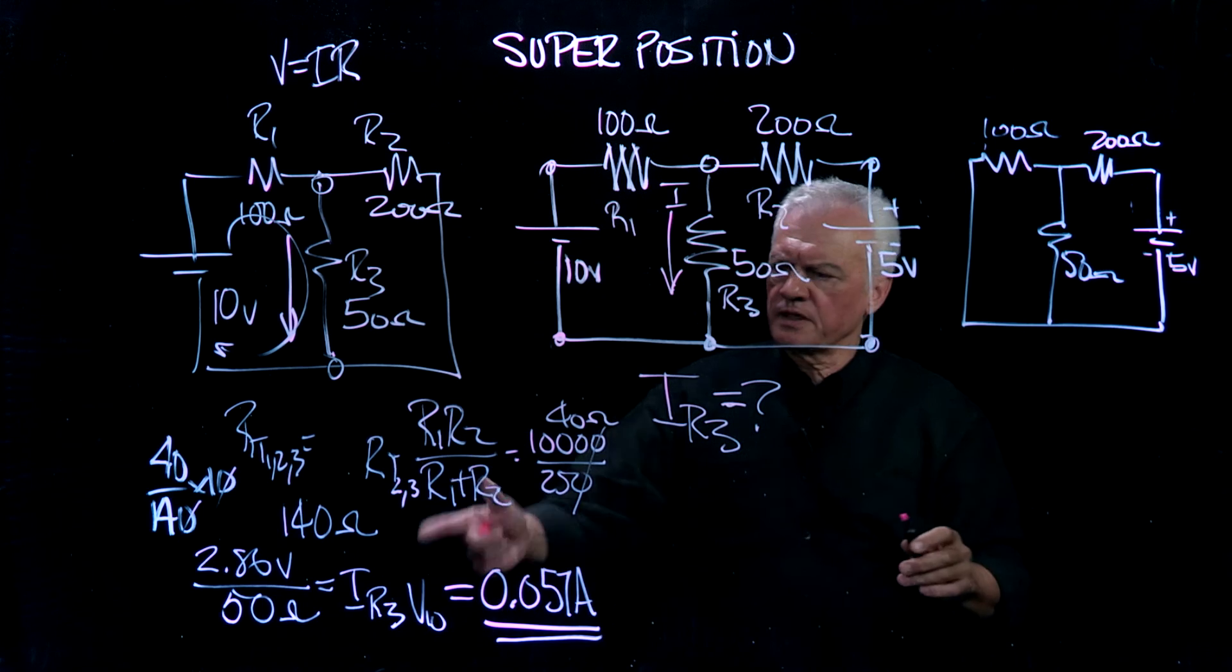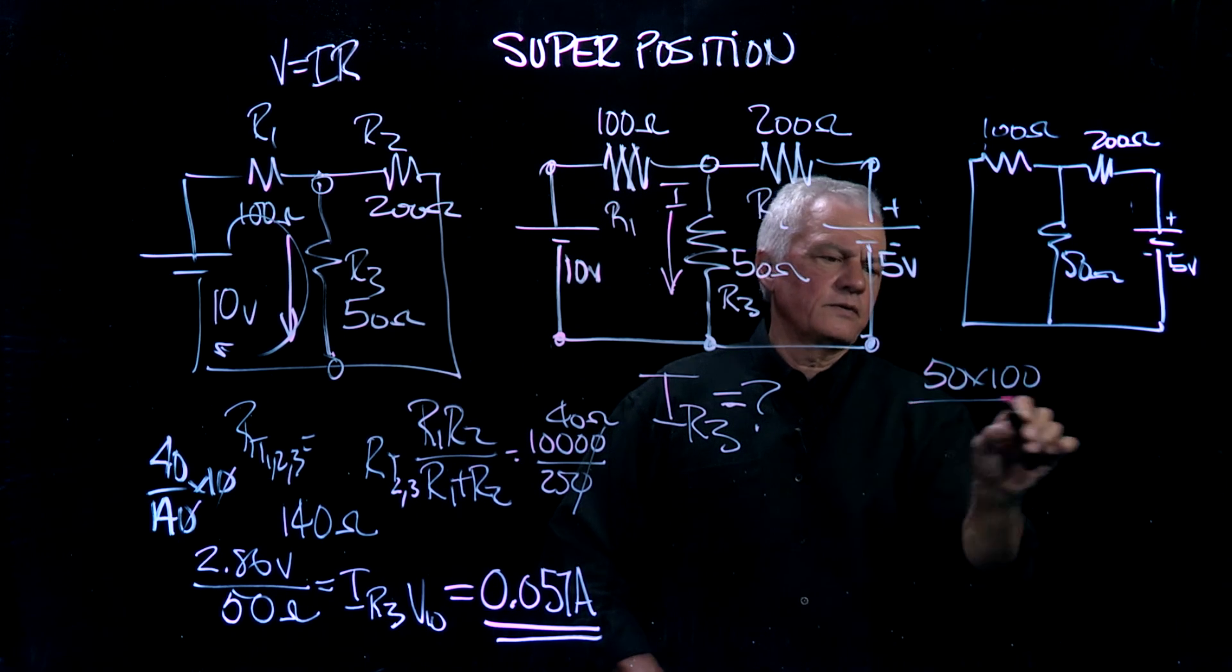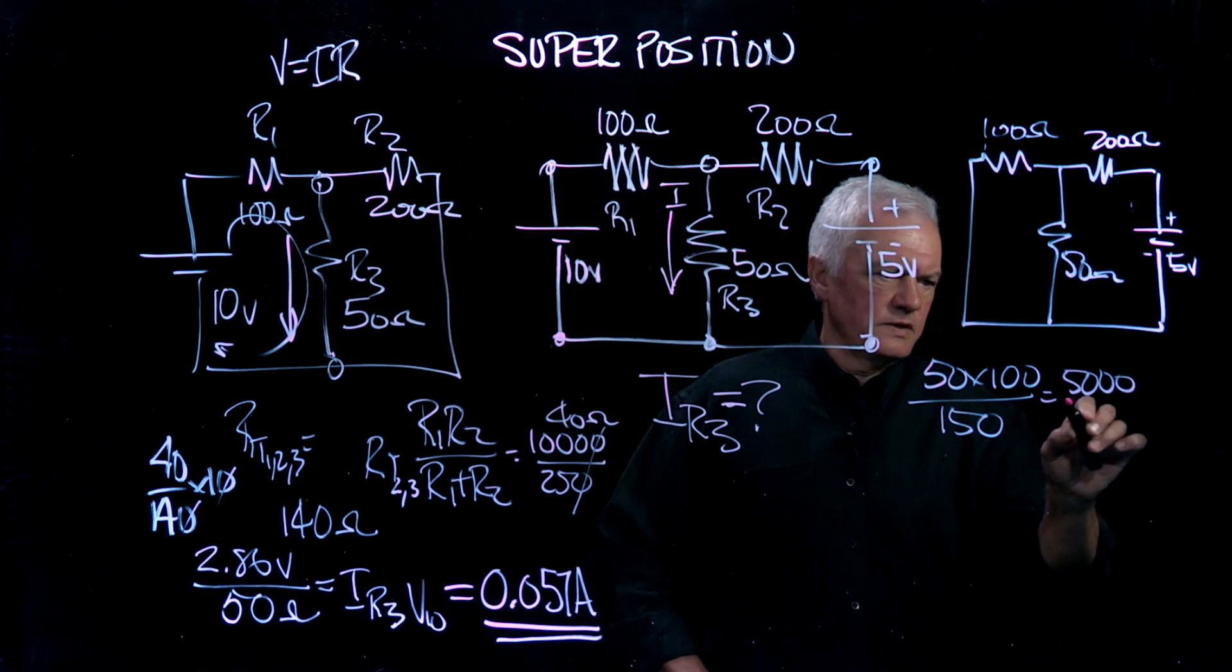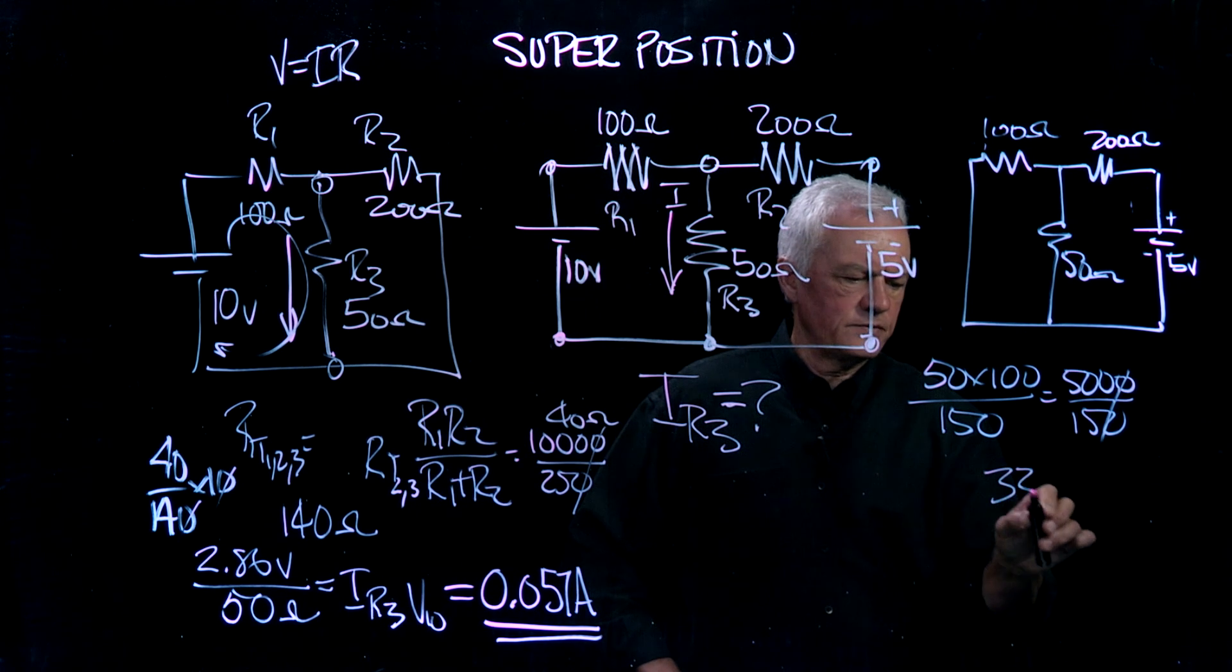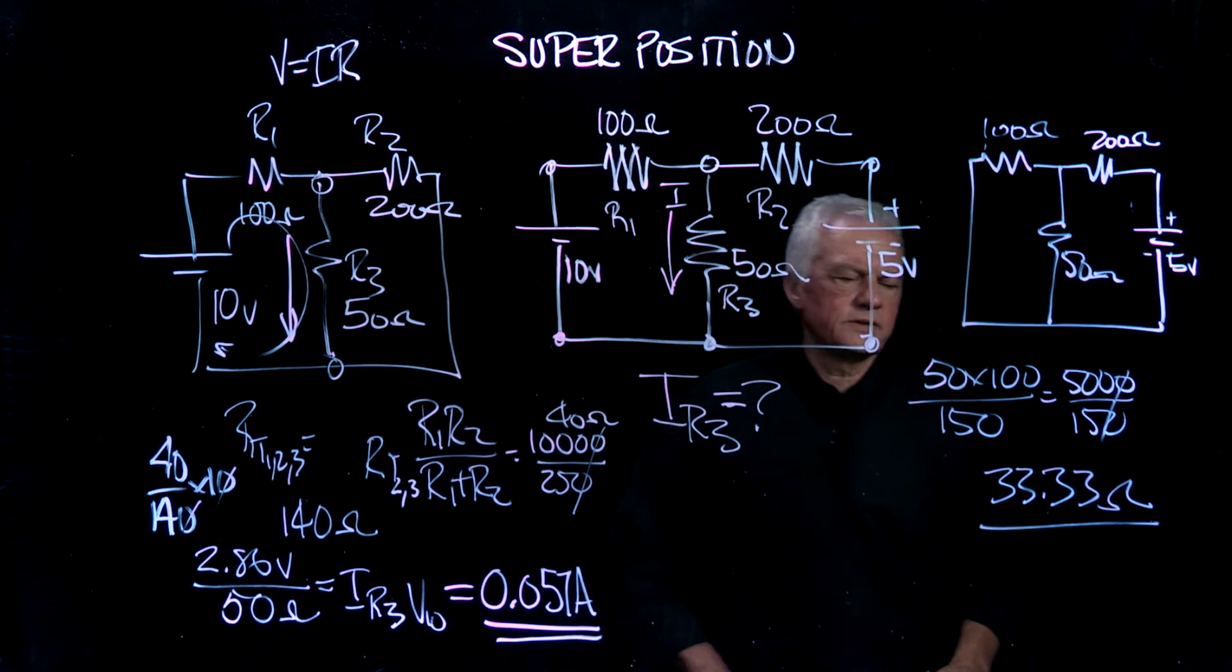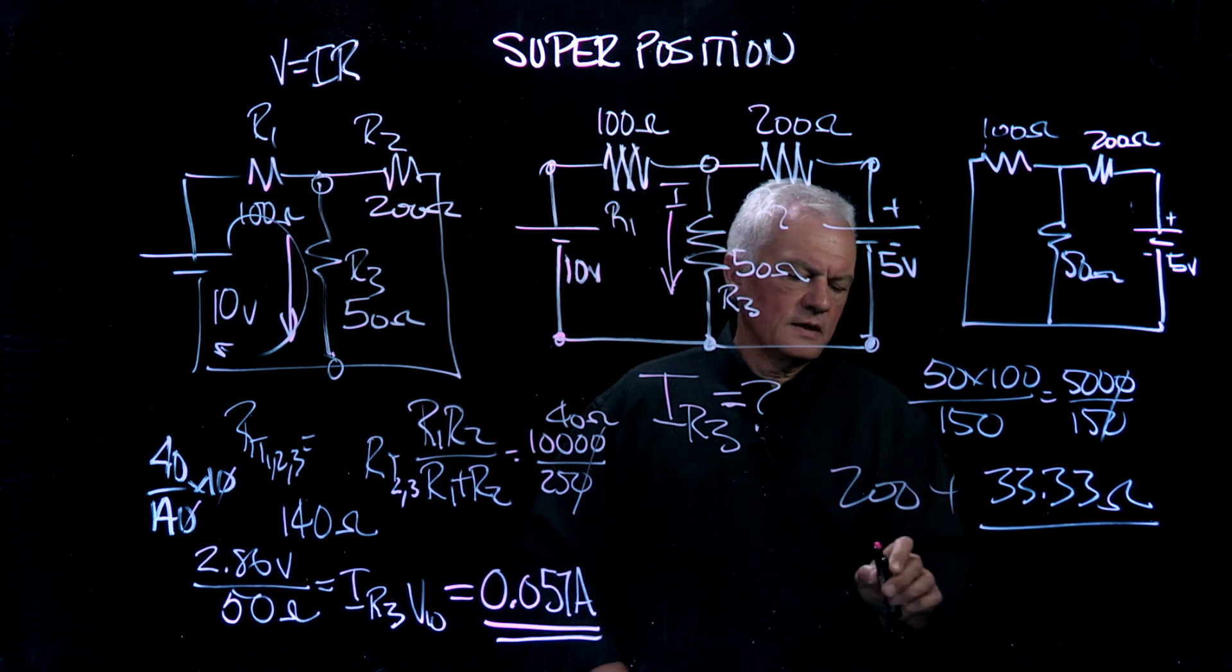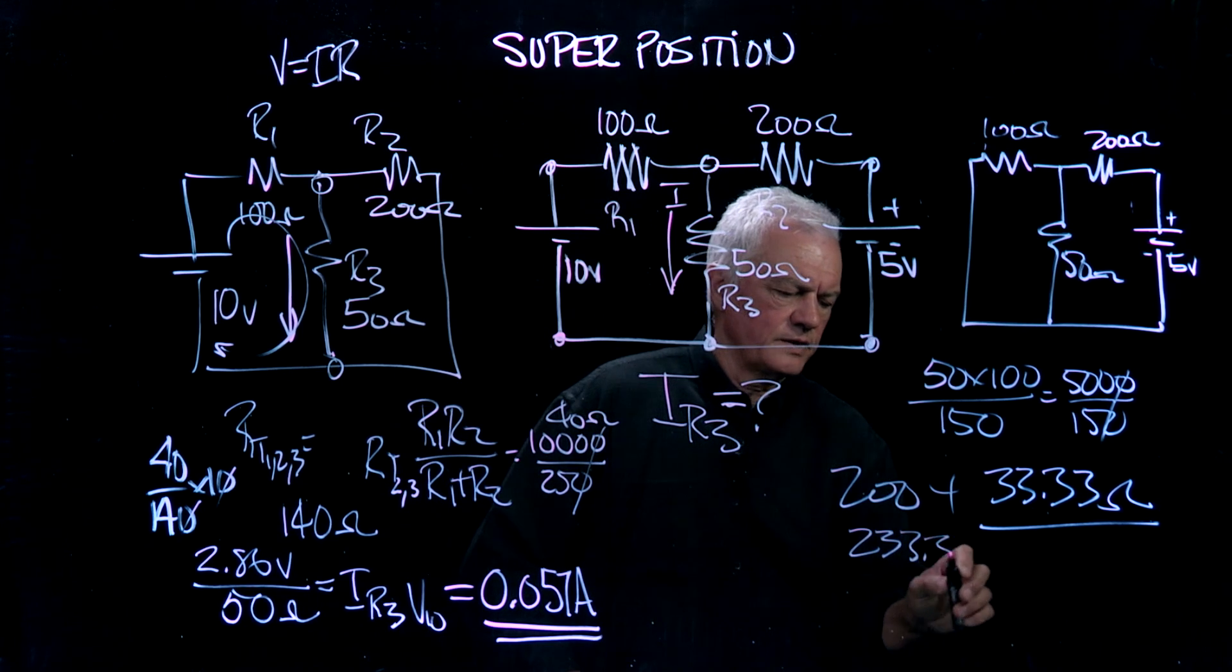Now, two in parallel. Let's use R1, R2 over the sum: 50 times 100 over 150, basically is equal to 5,000 divided by 150, is equal to 33.33 ohms. Make sense? Two resistors in parallel result in a resistance lower than that. We have to add to that 200. So our total as seen by the 5 volts is going to be 233.33 ohms. Two in parallel, one in series.